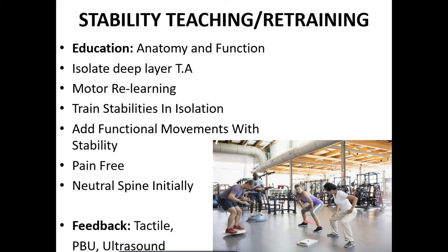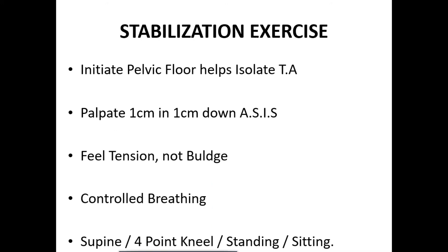Use tactile cues, real-time ultrasound, and stabilization exercises. Initiate pelvic floor to help isolate transverse abdominus. Palpate 1 cm in and 1 cm down from the anterior superior iliac spine — feel for tension, not bulge. Use controlled breathing. The patient should be in supine, 4-point kneeling, or sitting position.